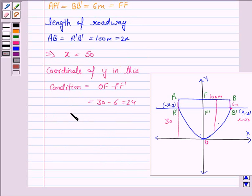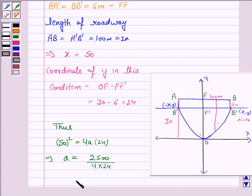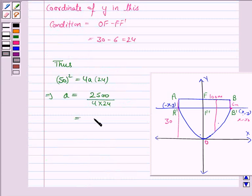Thus we substitute the values of x and y in the equation of the parabola. So 50² = 4a × 24, which implies a = 2500 divided by (4 × 24), which equals 625/24.